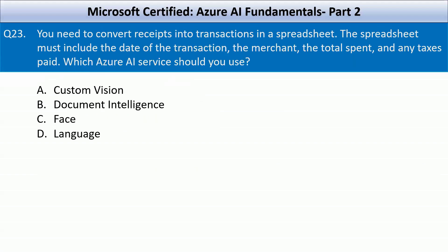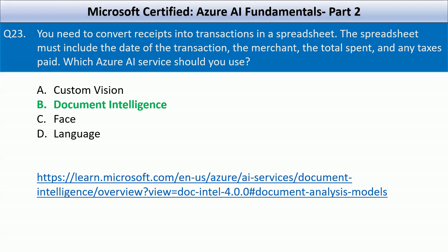You need to convert receipts into transactions in a spreadsheet including the date of transaction, the merchant, the total spent, and any taxes paid. Which Azure AI service should you use? Options are Custom Vision, Document Intelligence, Face, or Language. Azure Document Intelligence is designed to extract structured data from documents like receipts, invoices, and forms. It can automatically identify fields such as date of transaction, merchant name, total amount spent, and taxes paid.